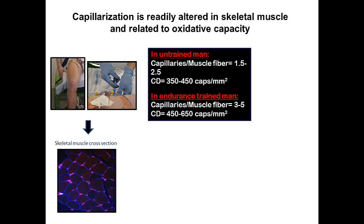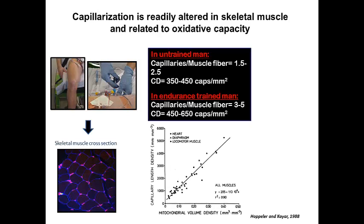In humans, muscle samples can be obtained by biopsy technique after local anesthesia of skin and fascia, and samples are most frequently obtained from the thigh muscle. Thin cross-sections of frozen muscle samples are immunohistochemically stained for detection of capillaries, and data show that the number of capillaries per muscle fiber can vary from one to two and a half in untrained individuals, and levels can be two to three fold higher in endurance trained muscle. The capillary density in the muscle is closely related to oxidative capacity, as shown in this graph where capillary length density is related to mitochondrial length density in different muscle groups and heart of various animals.